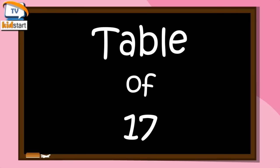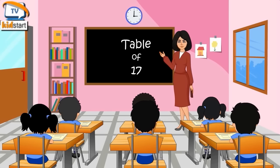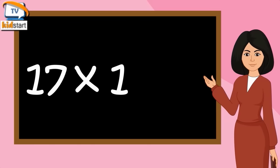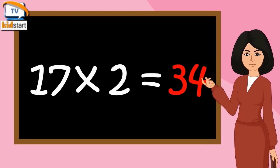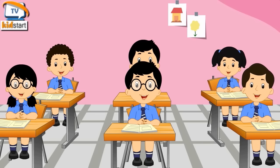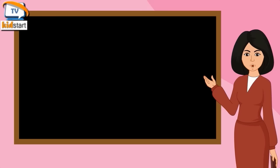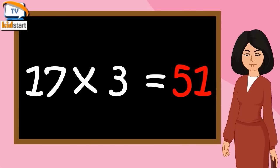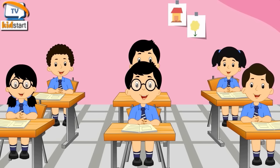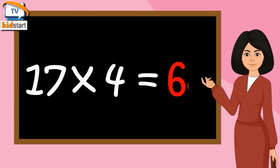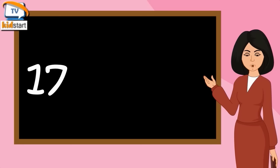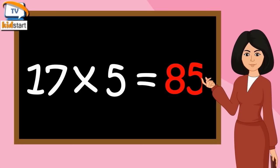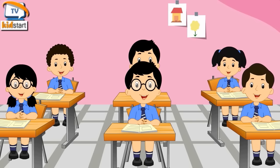Table of 17. 17 ones are 17. 17 twos are 34. 17 threes are 51. 17 fours are 68. 17 fives are 85. 17 sixes are 102.